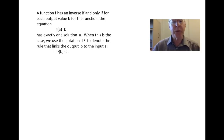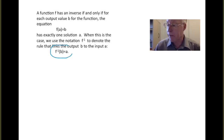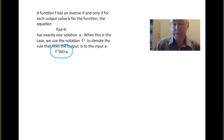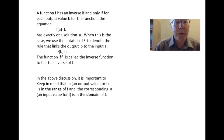When this is the case, we use the notation f inverse — that's an f with a minus 1 exponent — to denote the rule that links the output b to the input a. So we would write f inverse of b equals a. The function f with exponent minus 1 is called the inverse function to f, or the inverse of f.